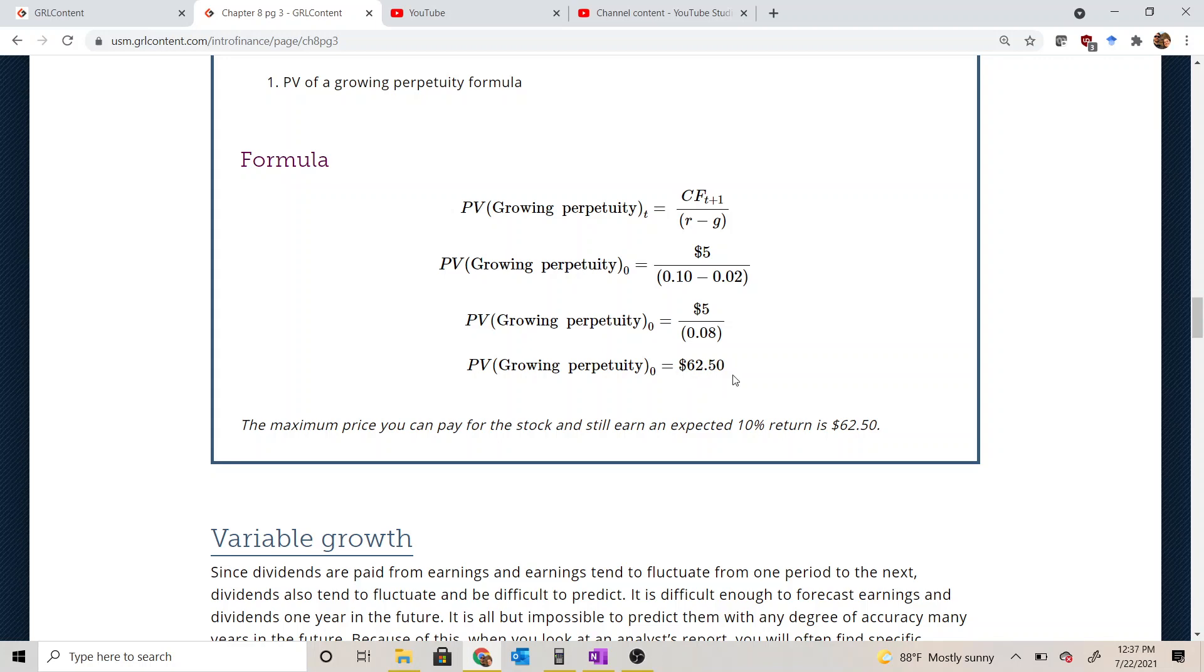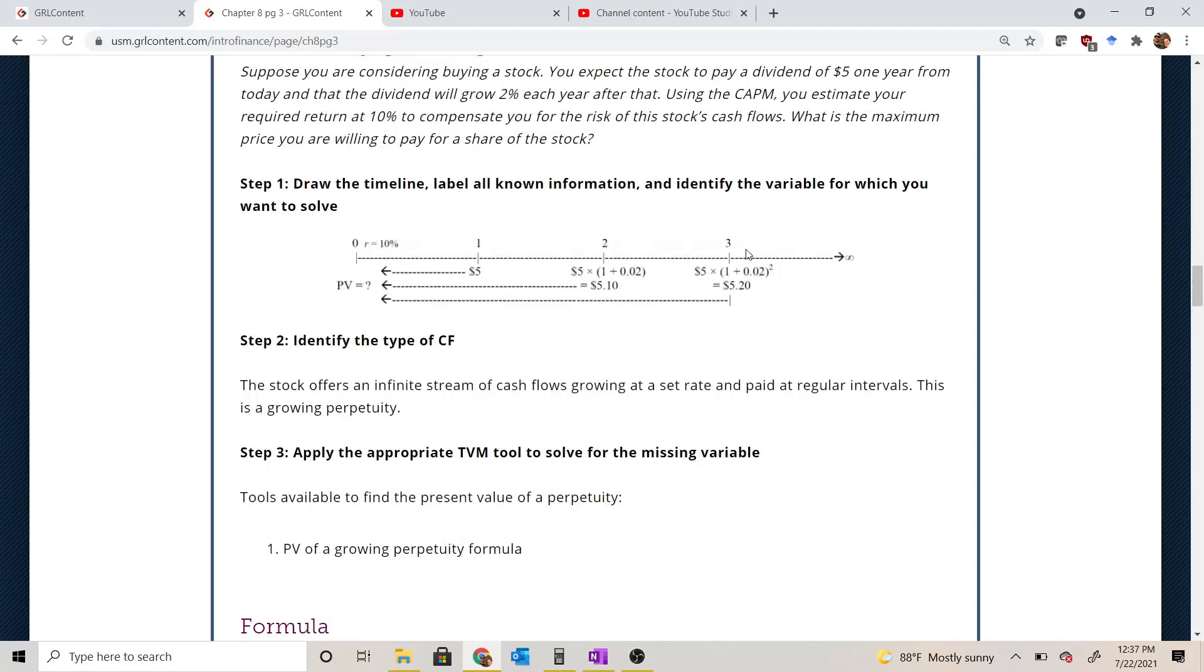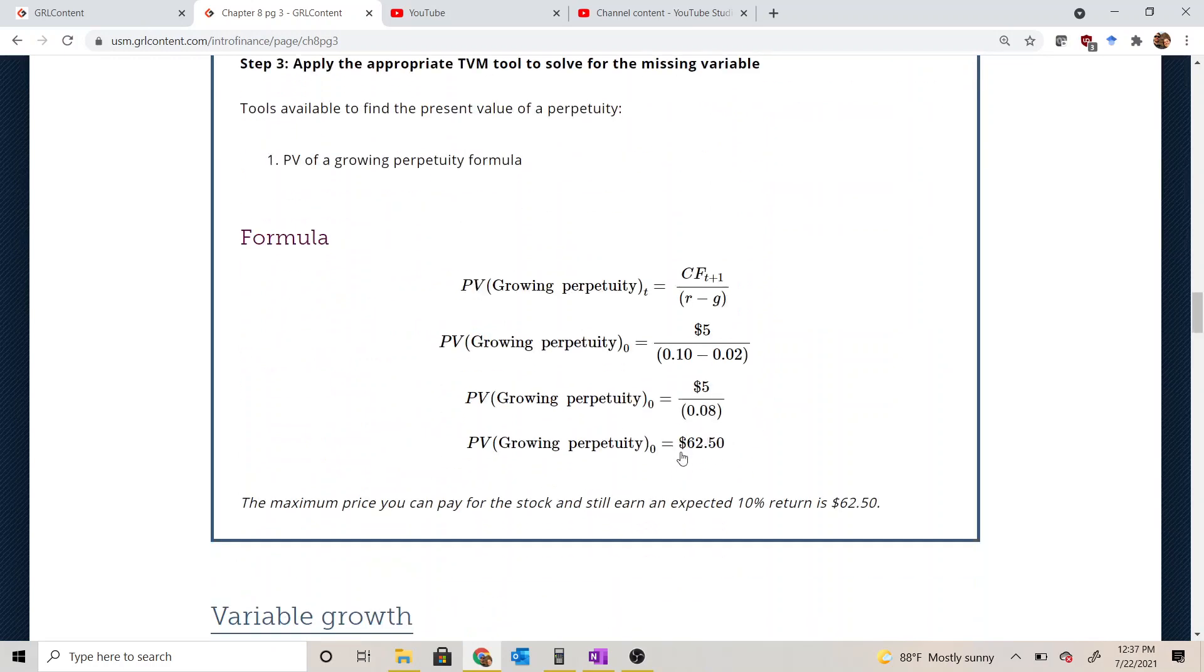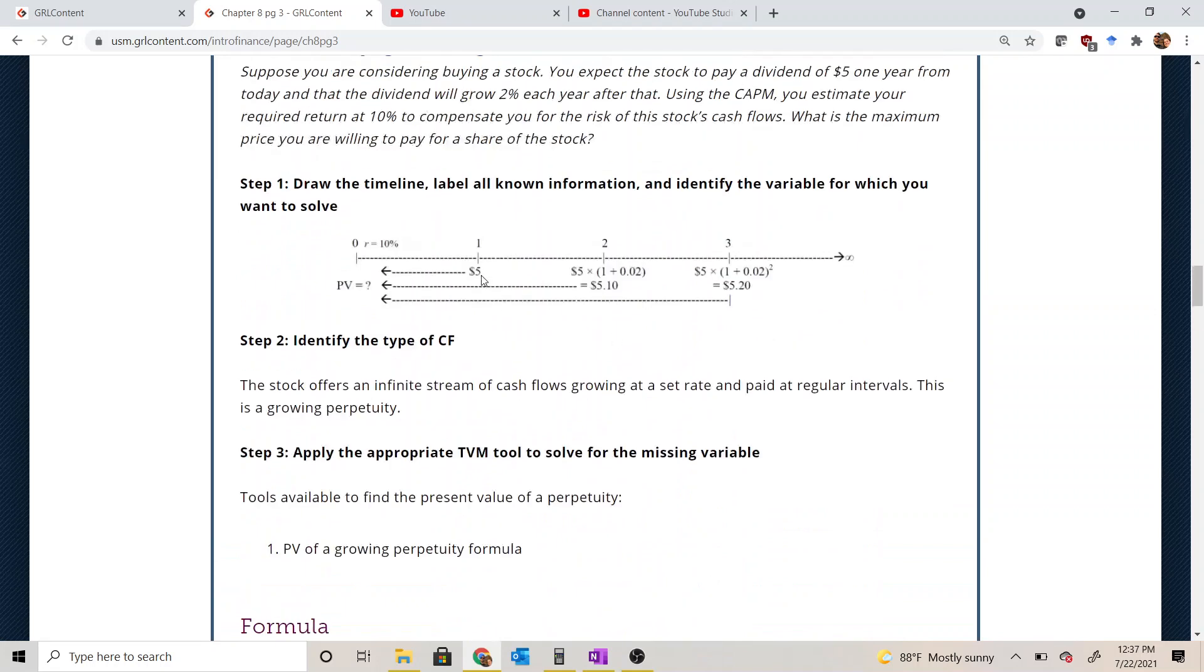Alright, now what does that number mean? I already kind of hinted at it earlier. Since we use 10% as our discount rate, that's our minimum required return in order to compensate us for this stock, the price we're getting back is the maximum price we can pay and still expect to earn 10% on this investment. We're assuming the cash flows in the future are fixed. We're pinning that piece down and holding it constant. Alright, so if we were to pay exactly $62.50 and then receive this infinite stream of cash flows that we're expecting, we would earn exactly 10% on our investment, which is what we need to compensate us for the risk.